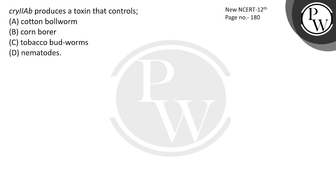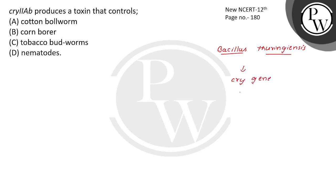Let's read this question: Cry2AV produces a toxin that controls... So here we are talking about the Cry2AV gene. This gene comes from Bacillus thuringiensis, which is a bacteria. In this bacteria there are cry genes, and this cry gene is responsible for the cry protein.